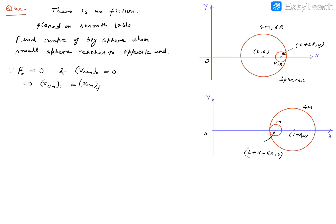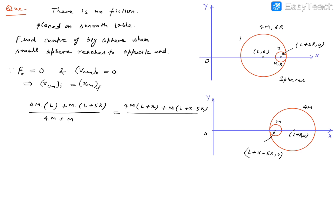Now we write the initial center of mass position. For the initial state: [4m·(l) + m·(l+5r)] / (4m+m). For the final state: [4m·(l+x) + m·(l+x−5r)] / (4m+m). Setting initial equal to final, the denominators cancel. In the numerator: 4ml + ml + 5rm = 4ml + 4mx + ml + mx − 5rm.